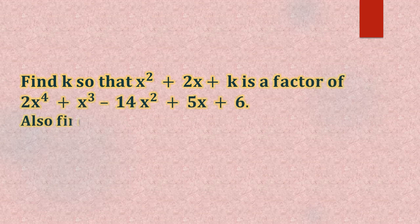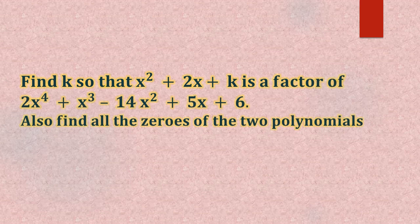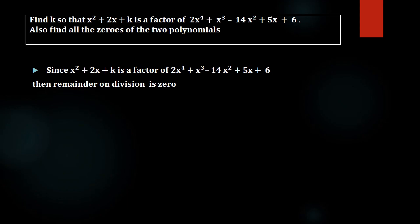Find k so that x² + 2x + k is a factor of 2x⁴ + x³ - 14x² + 5x + 6. Also find all zeros of the two polynomials. Let us start.